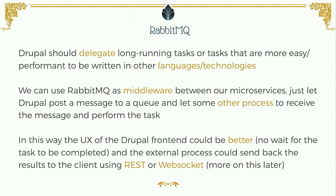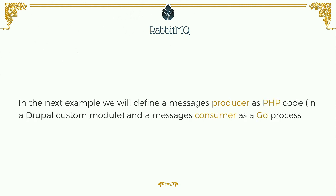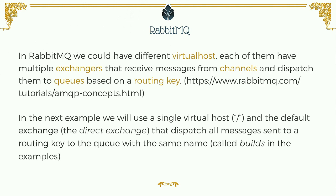We let Drupal post a message to a queue and some other process consume those messages. In this way, the UX of the Drupal front-end can be better because we don't have to wait for Drupal to finish a task. In the next example, we define a message producer in PHP — for example, a Drupal custom module — and a message consumer as a Go process.